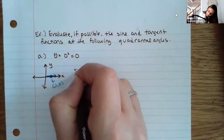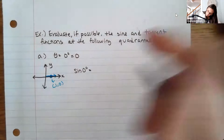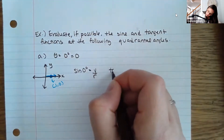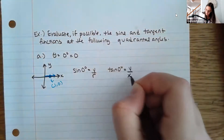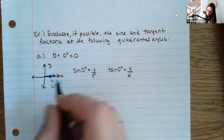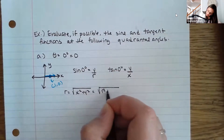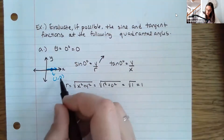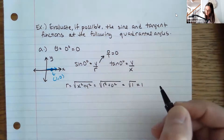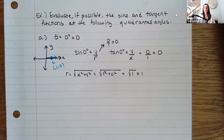So I want to find sine of zero degrees, which is y over r, and tangent of zero degrees, which is y over x. First, finding r: using the point (1, 0), r is the square root of 1 squared plus 0 squared, which is just 1. That means sine is 0 over 1, which is 0. And tangent is 0 over x, which is also 0. So for this problem, both the sine value and the tangent value are 0.